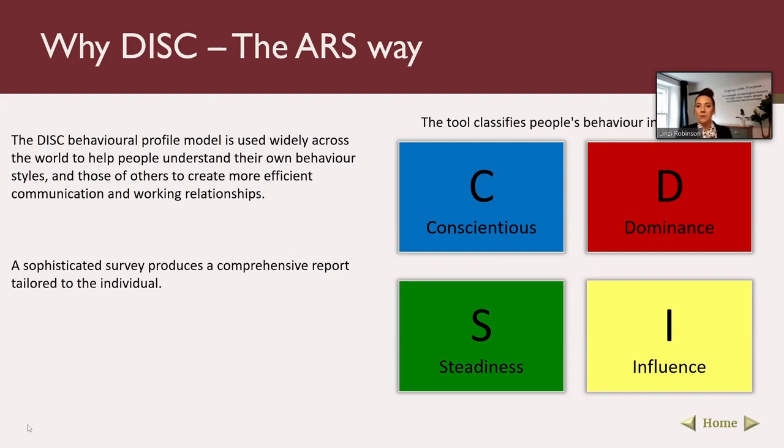Looking at profiles in more detail: the four core behavioral tendencies. A High D is very results-focused, rapid at making decisions, and sees challenges well. High D's are good in meeting environments, making sure the meeting stays on agenda and on track. High D's are usually CEOs and people in charge of running companies, because you need them looking at results and the big picture.